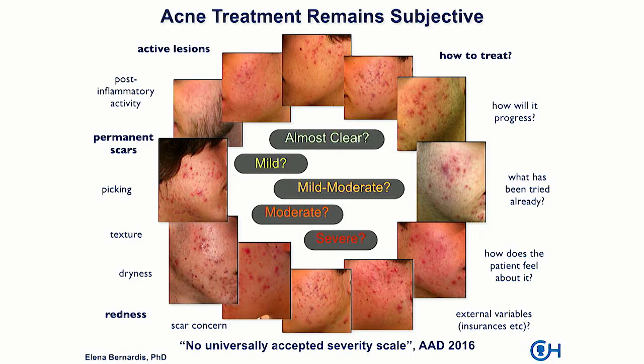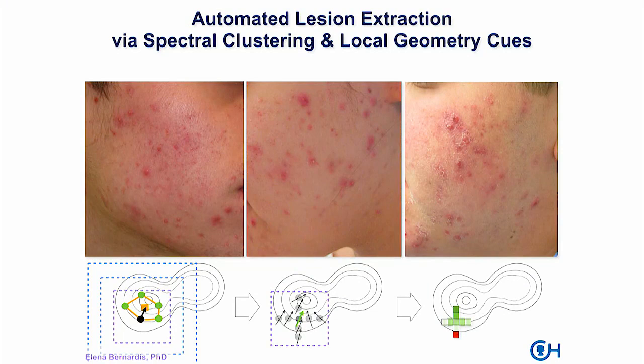Why is acne so challenging? First, it's due to the many facets of its appearance — there are a lot of active lesions to consider, but also post-inflammatory ones, in particular scars. When a doctor diagnoses the skin, they also have to consider texture, redness, whether the patient has been picking, what treatment has been done already, and external variables like whether insurance covers it. Our solution: we created an automated lesion extraction algorithm. We base it on spectral crossing for the image segmentation framework, but instead of relying on edge maps, we design new local geometrical features to encode the characteristics of the skin spots.